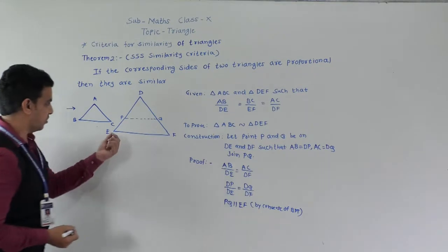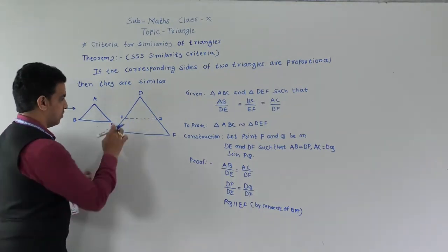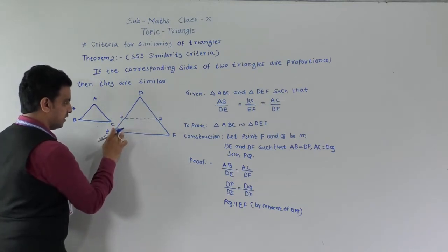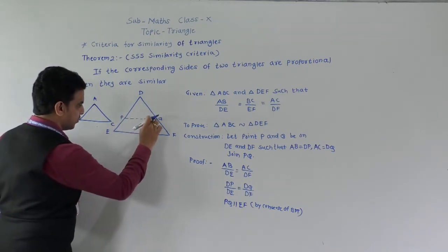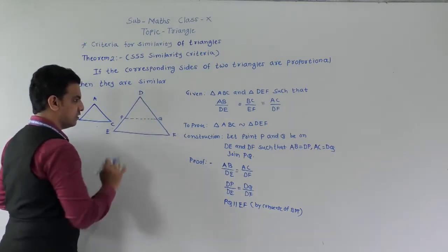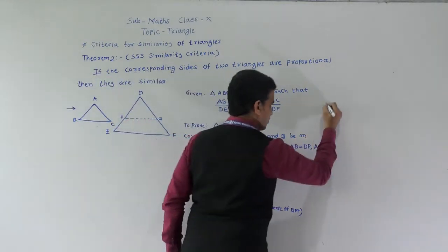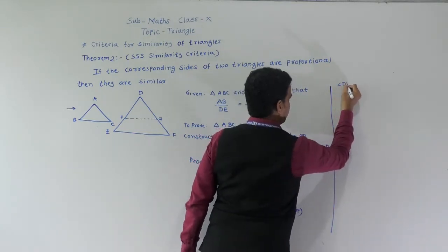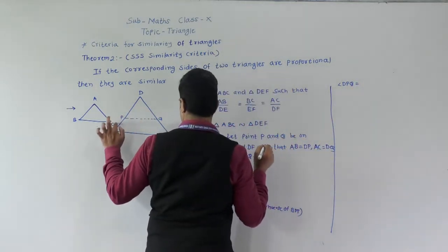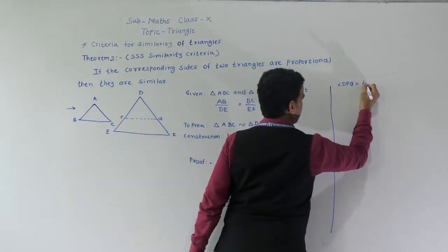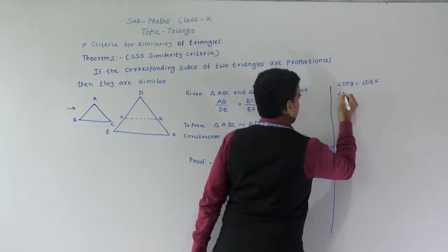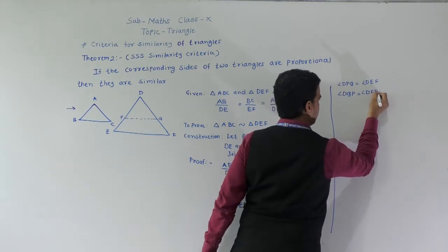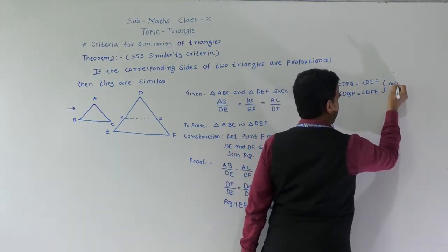Since DP by DE is equal to DQ by DF, by the Converse of the Basic Proportionality Theorem, PQ is parallel to EF. Since PQ is parallel to EF, corresponding angles are equal: angle DPQ is equal to angle DEF and angle DQP is equal to angle DFE.